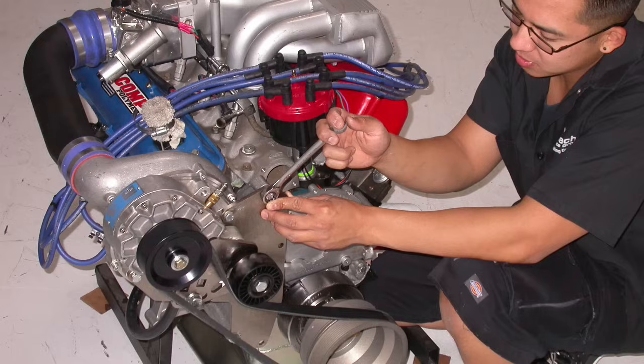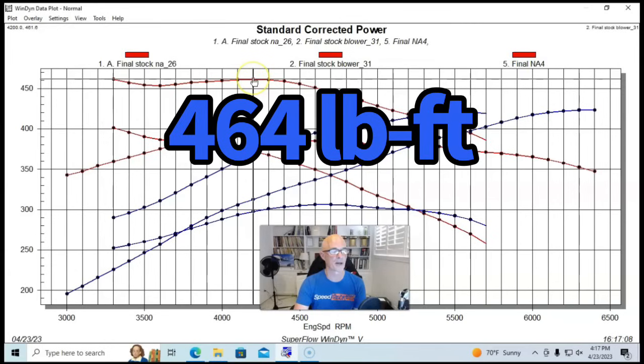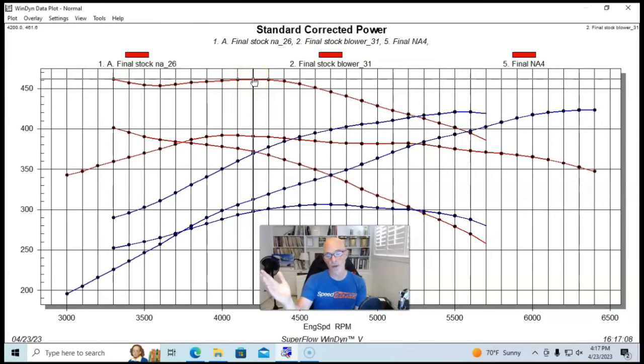And obviously the blown 347 with the stock components made much more torque. I mean, it was up in the 460 foot pound range, and it made more torque through the whole curve.